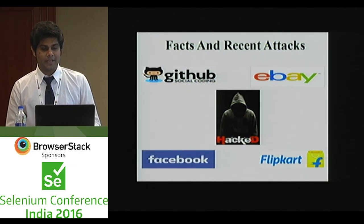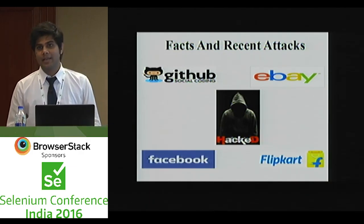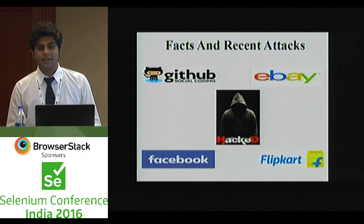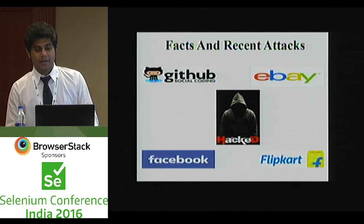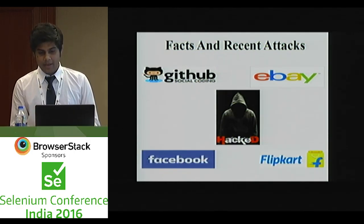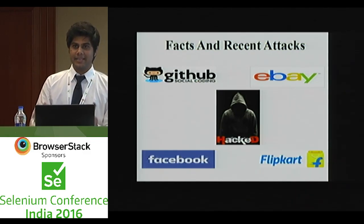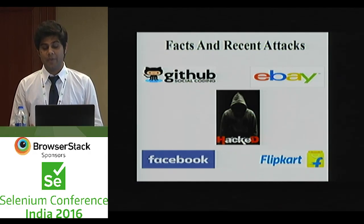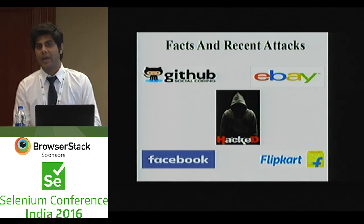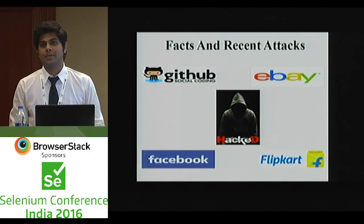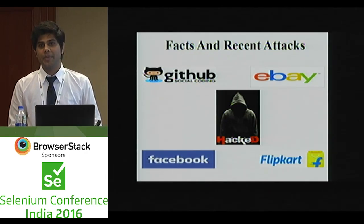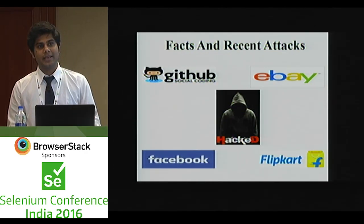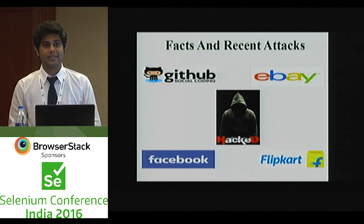Last year, GitHub was attacked by a DDoS — denial of service attack — so you can imagine how it can make an impact on any company's business. Another example is eBay. eBay was a victim of cross-site scripting, where attackers injected their script into the home page of eBay. When you launch the URL of eBay, it shows you a fake login page, and if you enter your credentials there, they go directly to the attackers, giving them full access to your account.